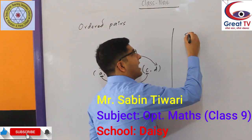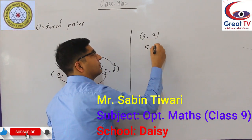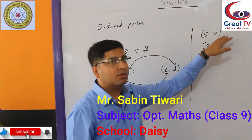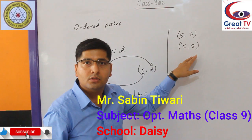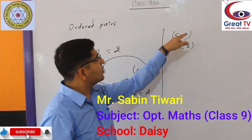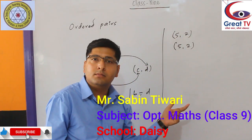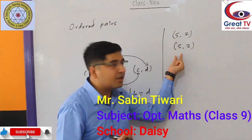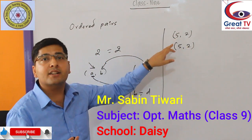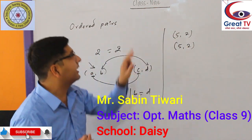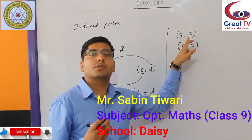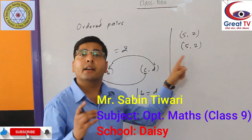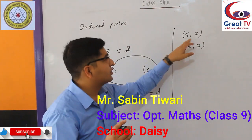You can see here: (5, 2) is the first ordered pair and (5, 2) is the second ordered pair. Can you say that these two ordered pairs are equal? Yes, definitely. The x-component 5 equals x-component 5, and the y-component 2 equals y-component 2. That's why these two ordered pairs are equal.